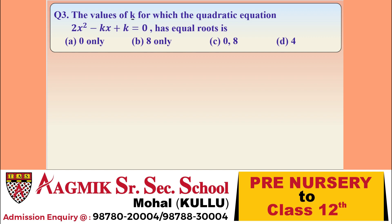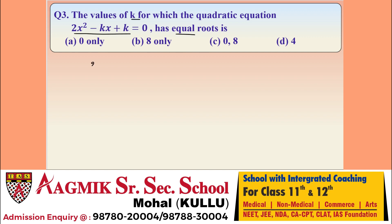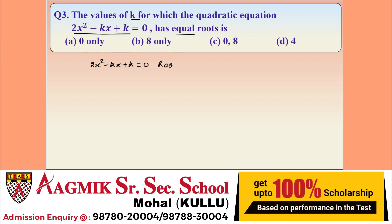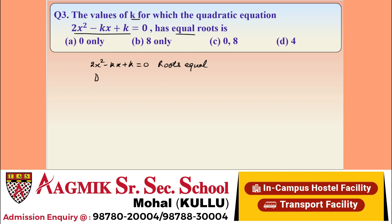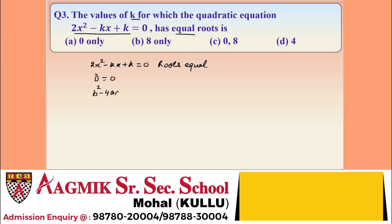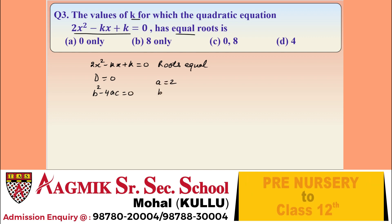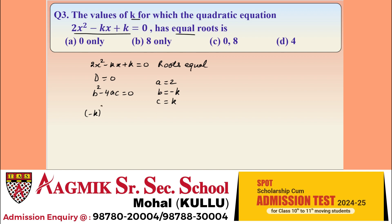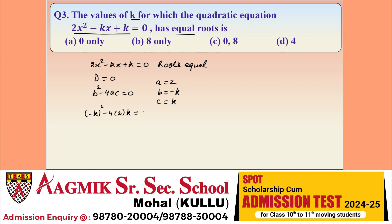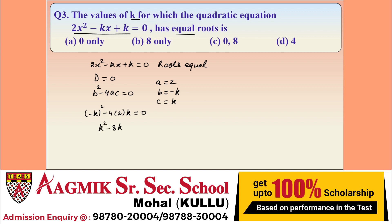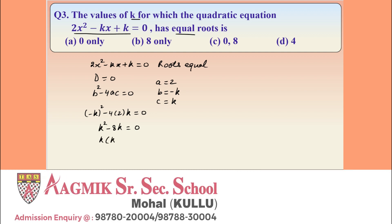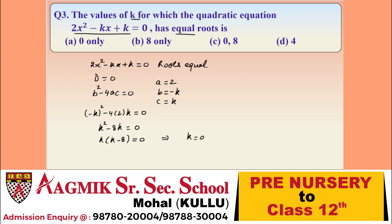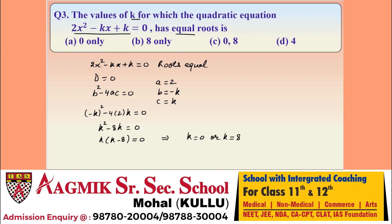Question 3: find the values of K for which the quadratic equation 2X² - KX + K = 0 has equal roots. When roots are equal, the discriminant is zero, so B² - 4AC = 0. Here A = 2, B = -K, C = K. So (-K)² - 4(2)(K) = 0, giving K² - 8K = 0. Factorizing: K(K - 8) = 0, so K = 0 or K = 8. Option C is correct.